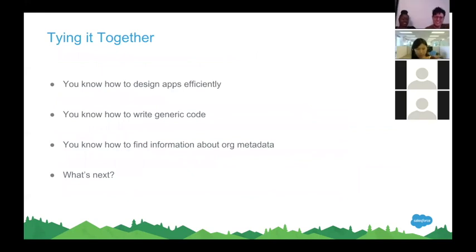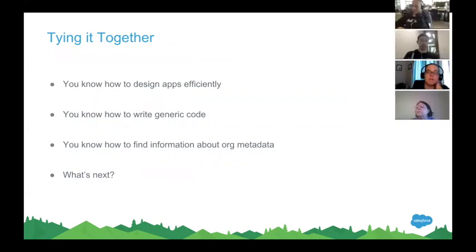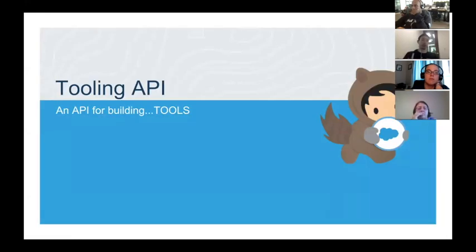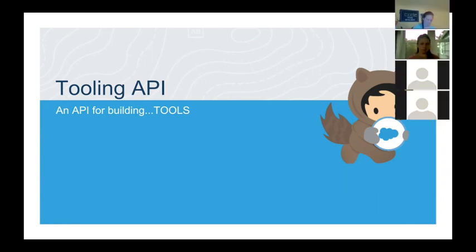So here are some examples of writing generic code and designing apps where we don't necessarily know what's in an org. We've also walked through how to find information about metadata for a particular org — what are the objects, what are the fields on those objects. The obvious question is: what do we do with all this? That's where the Tooling API comes into play. At its core, the Tooling API was built as an API for building tools. How do you figure out what's in your org? You're a brand new admin or developer coming into an org — how do you quickly figure out what's there? You can potentially build a tool to help somebody solve a problem like that.